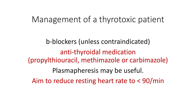In terms of thyrotoxic patients, they could be started on beta blockers unless that is contraindicated, and antithyroid medication such as propylthiouracil or carbimazole. Plasmapheresis may also be useful. The aim here is to reduce the resting heart rate to less than 90 beats per minute.